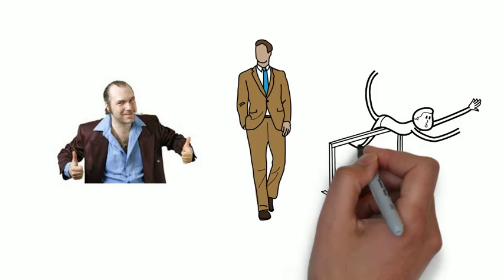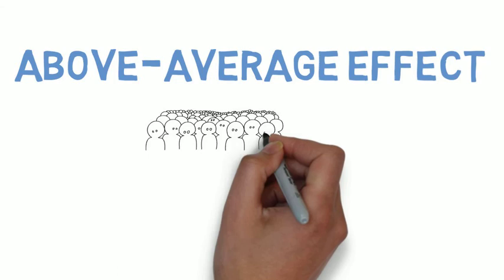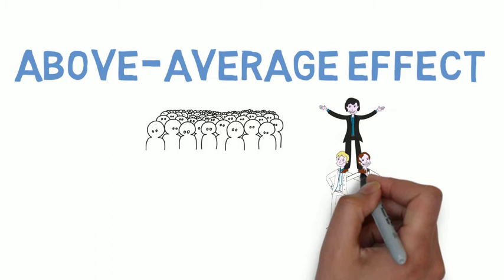The third and final idea that I want to share with you is known as the above average effect. There was once a study done on nearly a million high school seniors and one of the questions asked them to judge themselves on their own ability to get along with others. Nearly 100% of them rated themselves as at least average in that category.